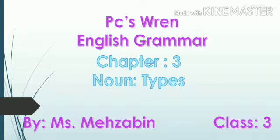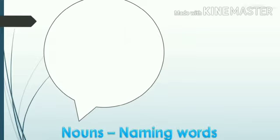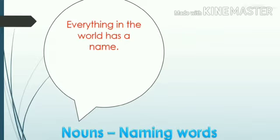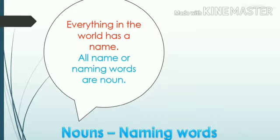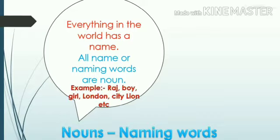So, before seeing types of noun, let's recall what is noun. Nouns are naming words. Everything in the world has a name. All name or naming words are nouns. Jo naam ya phir naam dene waale words use hotay hain, usse haam noun kehtae hain. Example: Raj, Boy, Girl, London, City, Lion, etc.